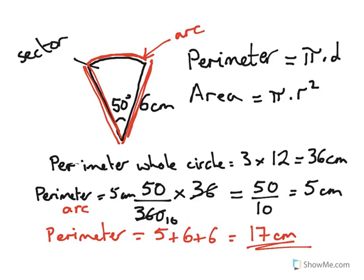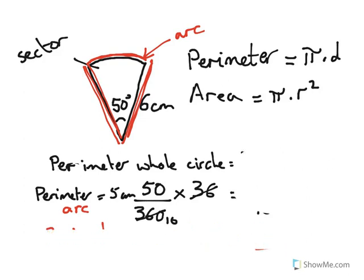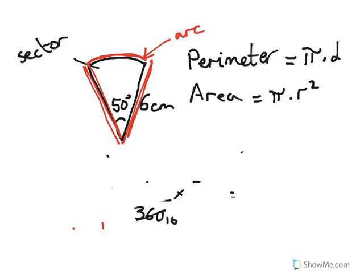So, we'd get a perimeter of 17 centimetres for that arc. Okay? That's the perimeter. We do actually pretty much the same thing when it comes to area. We calculate first the whole area of the circle. So, let's take this away.